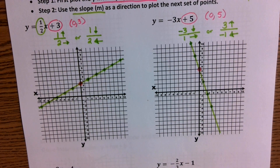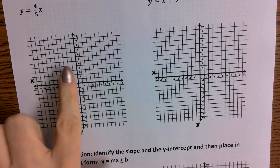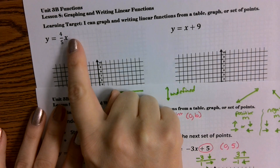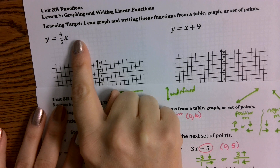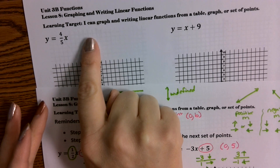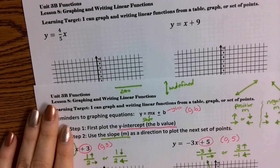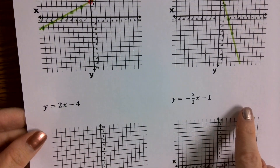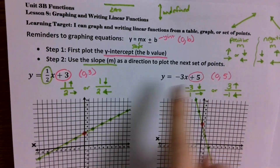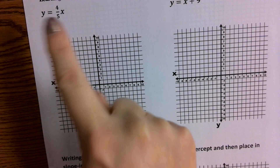I want you to go ahead and do the next 4 graphs — 2 on this page and 2 on the back. Make note: if you don't have anything being added or subtracted, that means your b value is 0, so your y-intercept is at the origin (0, 0). When you don't have an addition or subtraction of a value, your y-intercept is at the origin, which means it's going to be proportional. Every graph I'm showing you right now is non-proportional because they all have a non-zero y-intercept. If it is proportional, the equation will have no y-intercept listed.